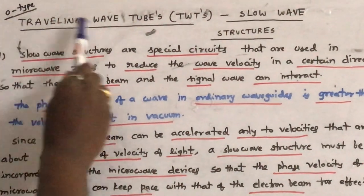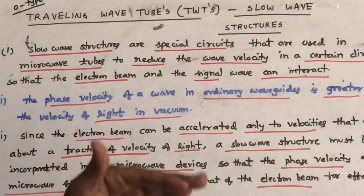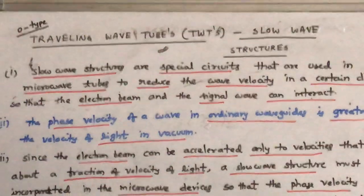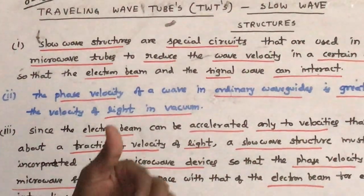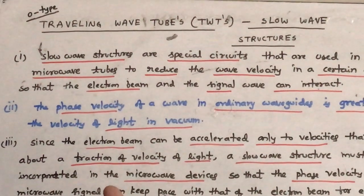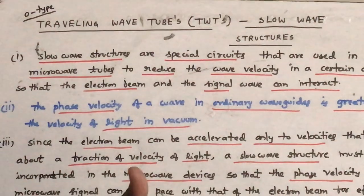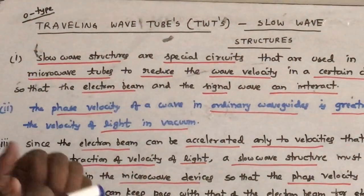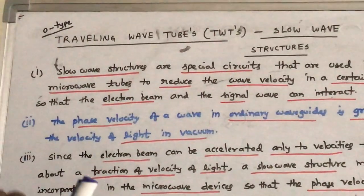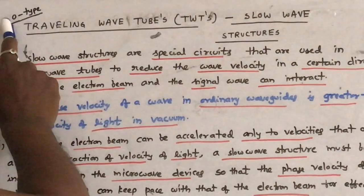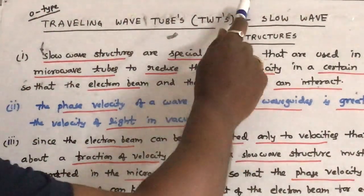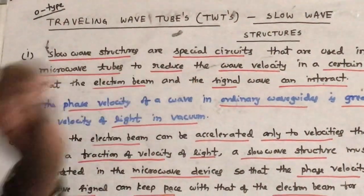Similarly, in travelling wave tubes also, there will be an interaction between the RF signal which is to be amplified and the electron beam. In order to make effective interaction between the RF signal and the electron beam, let us see what this travelling wave tube is going to do — that is what the slow wave structures are about. Similar to reflex klystrons and two-cavity klystrons, travelling wave tubes also come into the category of linear beam tubes or O-type tubes.